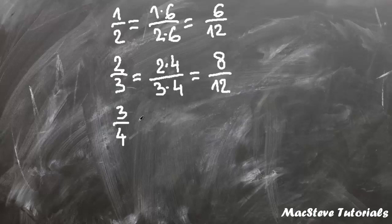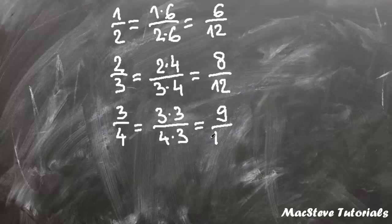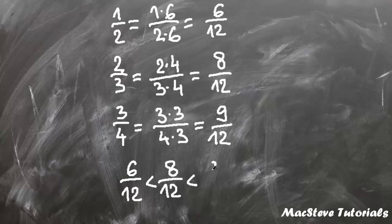Now 3 quarters we multiply by 3 and we get 3 times 3 over 4 times 3, which is 9 over 12. Now we can see that 6 over 12 is lesser than 8 over 12, which is lesser than 9 over 12. Which means that 1 half is lesser than 2 thirds, which is lesser than 3 quarters.